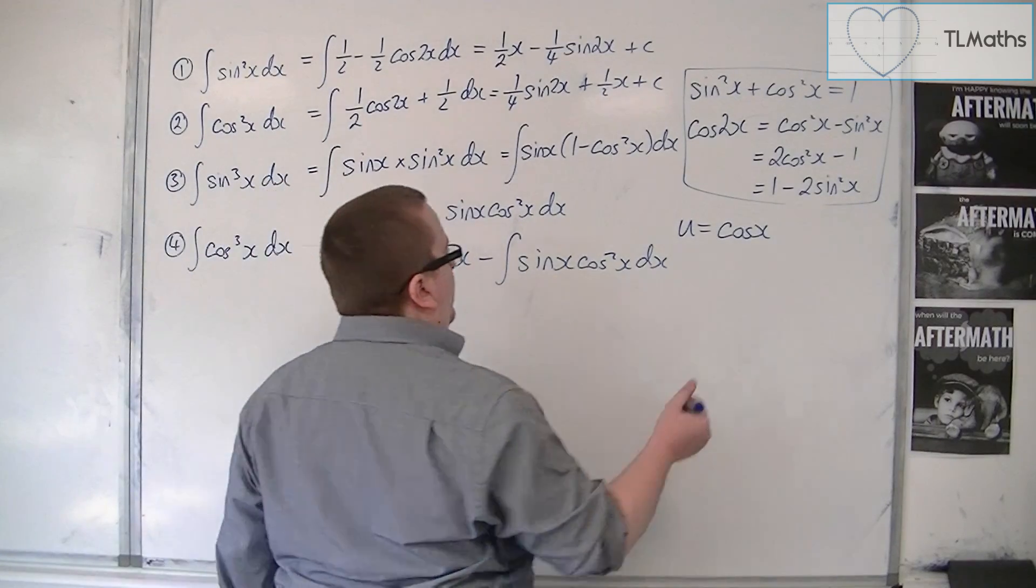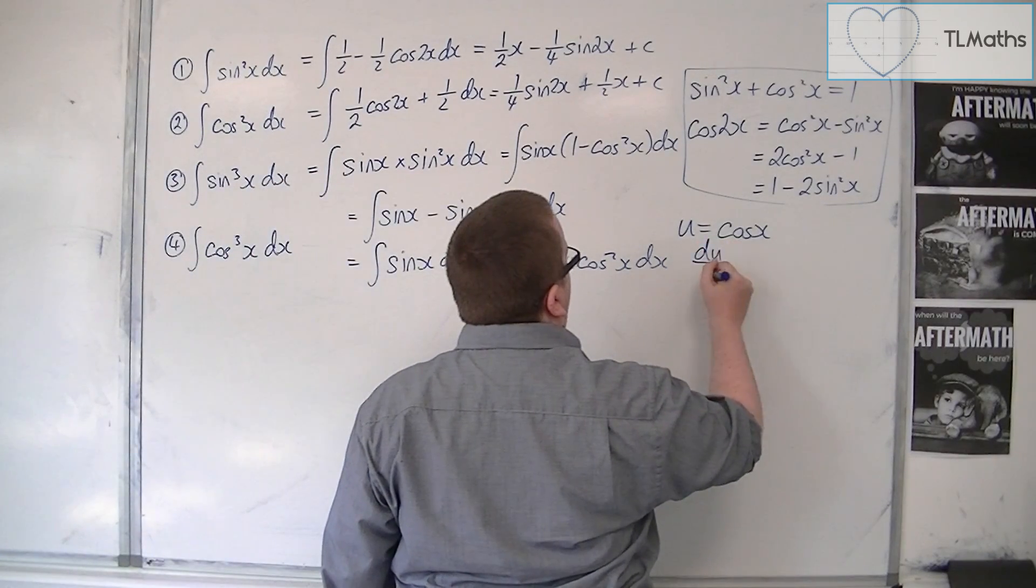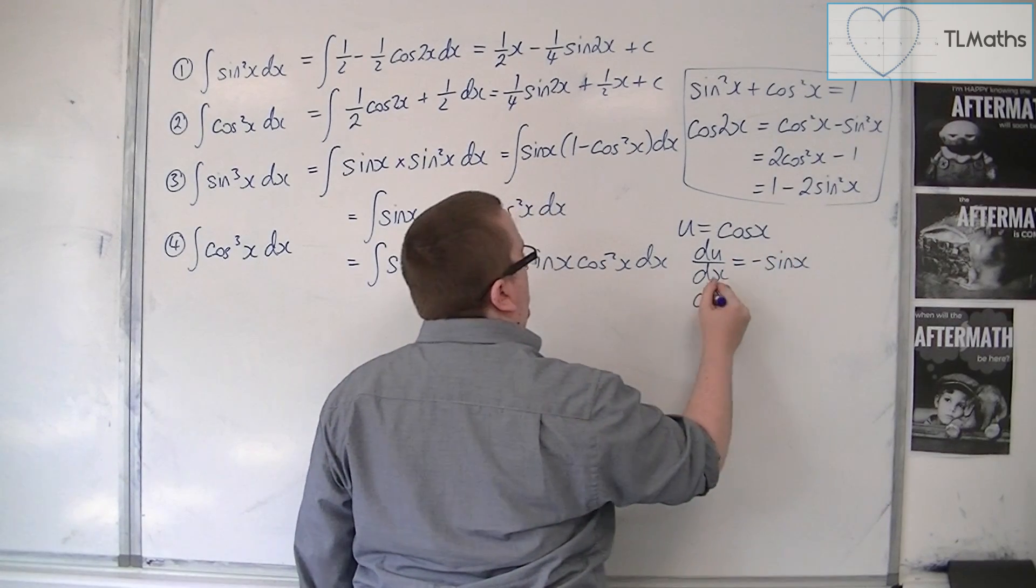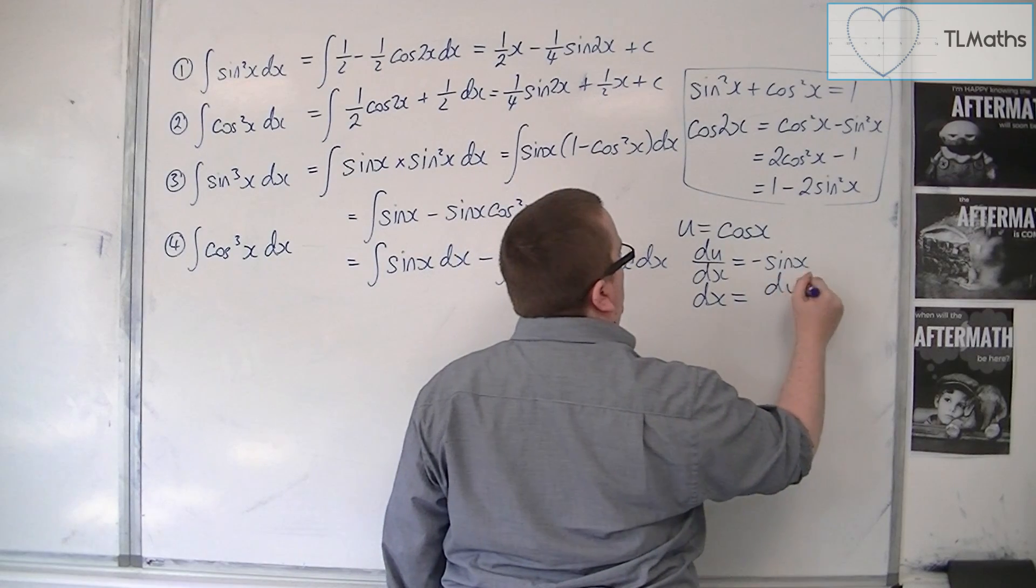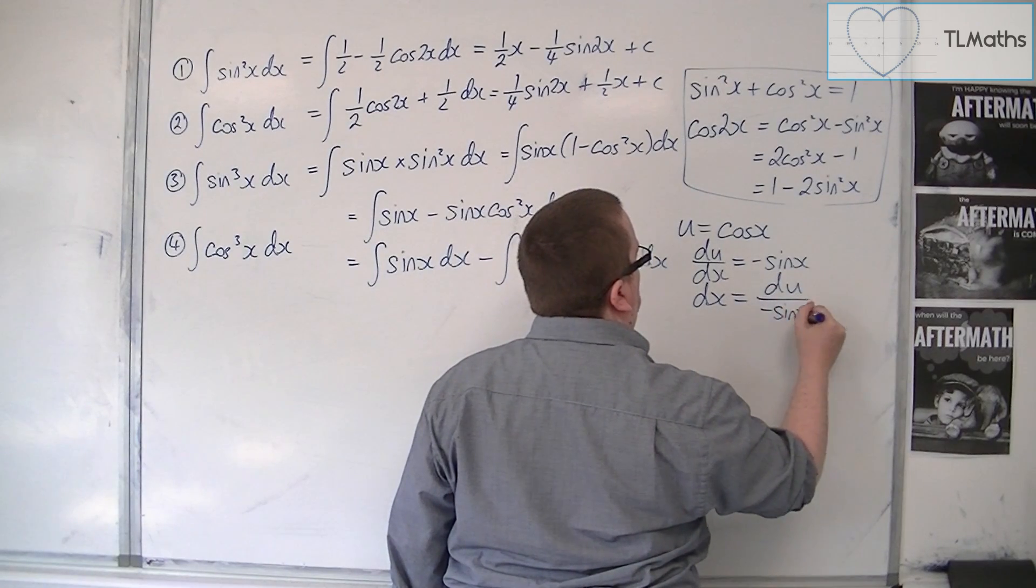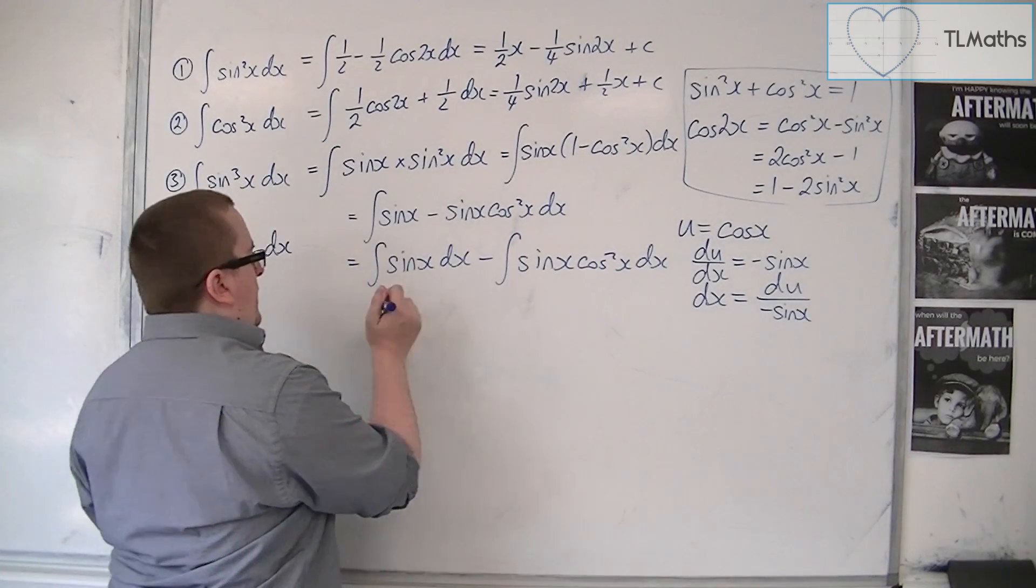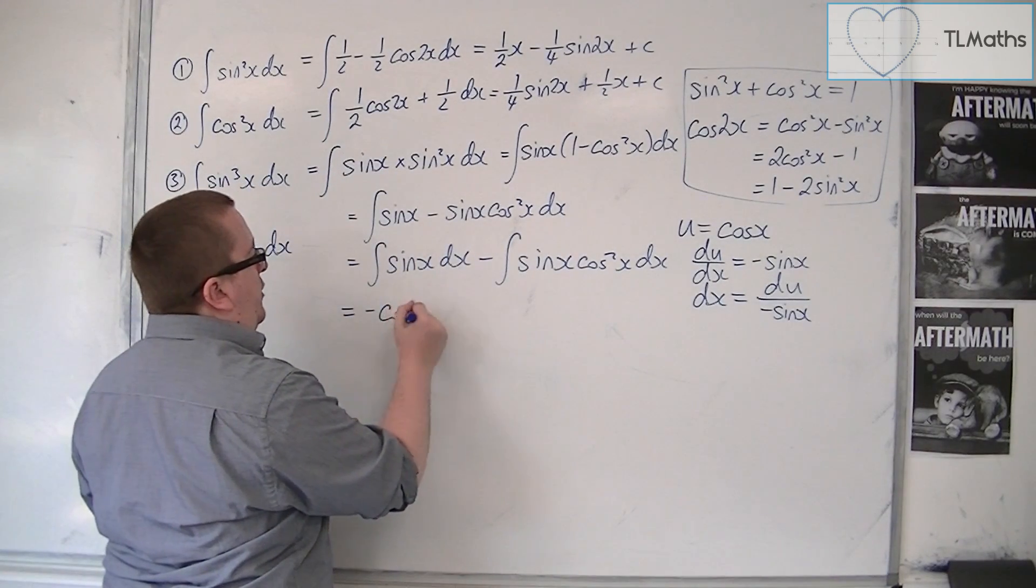So if u is cosx, then du by dx is minus sinx. And so dx is equal to du over minus sinx. So the integral of sinx, I know what that is. That's minus cosx.